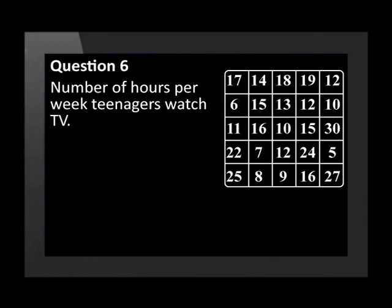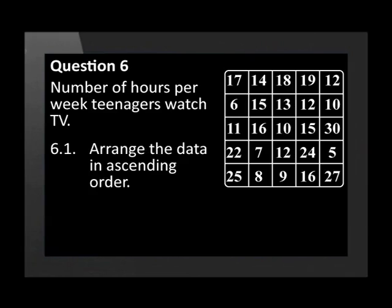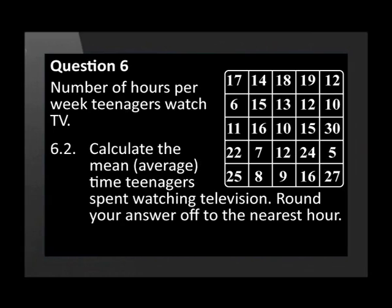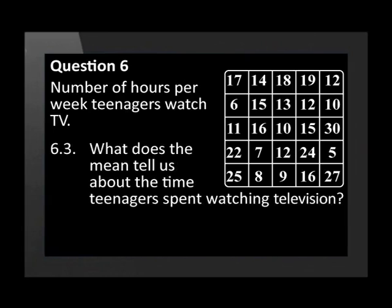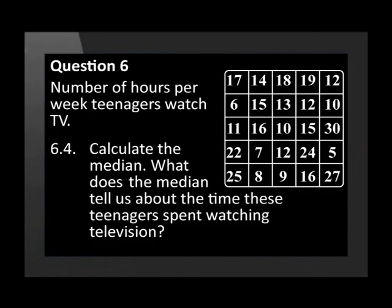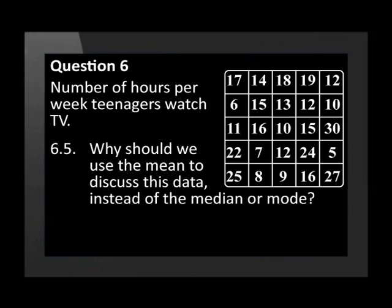The data set shows the number of hours in a week 25 teenagers spent watching television. Their times have been rounded off and are correct to the nearest hour. Arrange the data in ascending order. Calculate the mean or average time teenagers spent watching television, and round your answer off to the nearest hour. What does the mean tell us about the time teenagers spent watching television? Calculate the median. What does the median tell us about the time these teenagers spent watching television? Why should we use the mean to discuss this data instead of the median or mode?